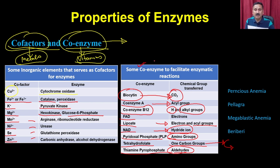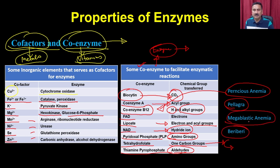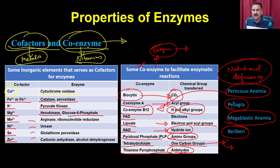Because these coenzymes are helping the enzymes, enzymes cannot function optimally without them, and deficiency of coenzymes or cofactors leads to different types of diseases. For example, you can have pernicious anemia if there is deficiency of vitamin B12, you can have pellagra if you have deficiency of other vitamins. We also have megaloblastic anemia and beriberi. All these diseases are because of nutritional deficiency - if you cannot have some of these molecules in your nutrition, these coenzymes are not present and the enzymes will not be able to function.